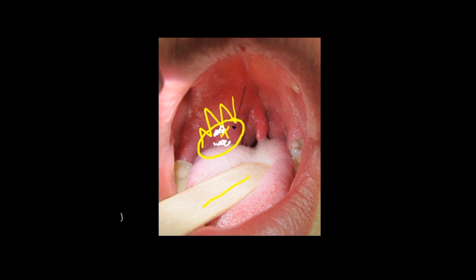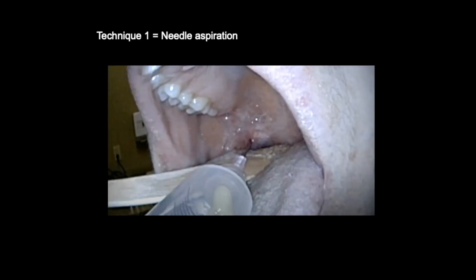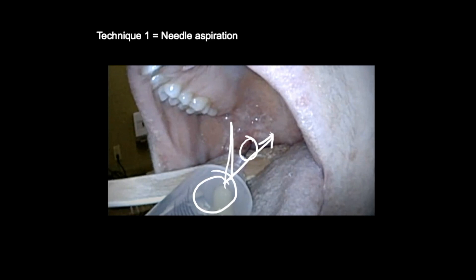For needle aspiration: use a 10ml syringe with an 18 or 20 gauge needle — a wide bore needle to get as much pus out as possible. Apply continuous suction while directing the needle in the sagittal plane, anterior to posterior, not to the side, to avoid perforating the carotid artery. Aspirate the most prominent area first, usually the superior pole; if no pus is obtained, try the middle and then the inferior pole, but do not aspirate the tonsil itself. Typically you'll get 2-6mls of pus — send that off for culture and keep the pus in the syringe.